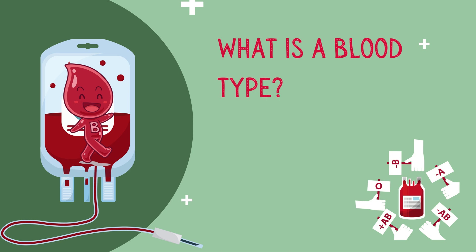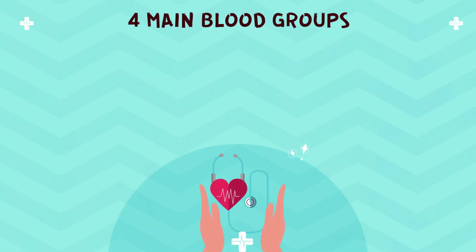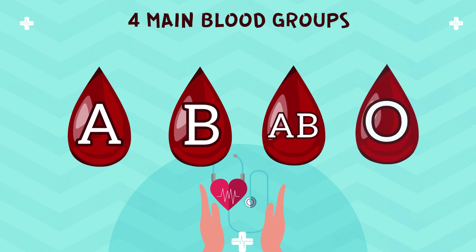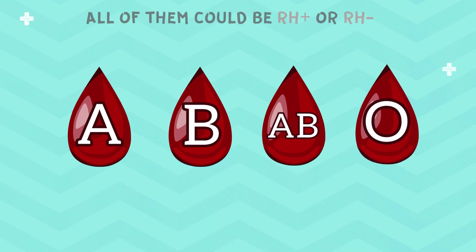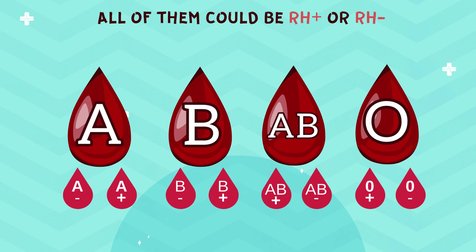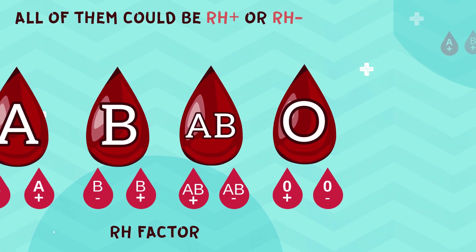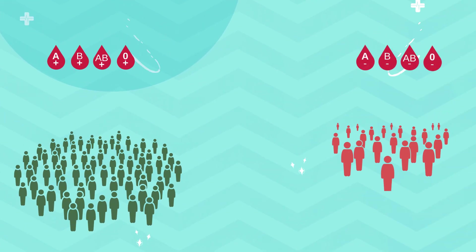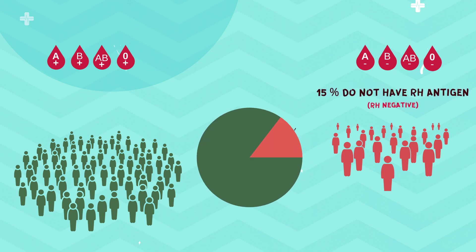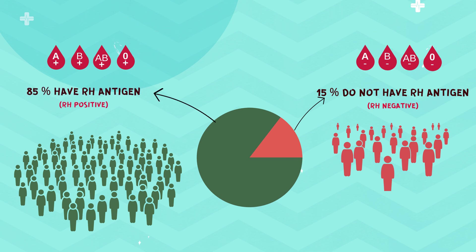So, let's shed more light on blood types, also known as blood groups. You probably know that there are four main blood groups: A, B, AB, or O. In addition, all four of them could be either Rh positive or Rh negative. This is a result of the Rh factor, an inherited protein found on the surface of red blood cells. If your blood has the protein, you are Rh positive, but if your blood doesn't have the protein, you are Rh negative. About 15% of the world's population lacks the Rh antigen and has an Rh negative blood type, while the remaining 85% who possess it has an Rh positive blood type.